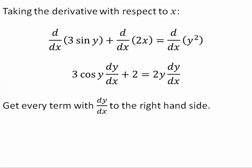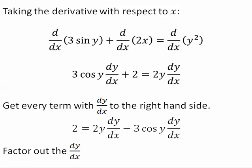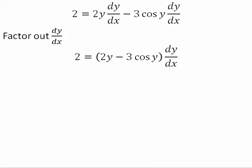Next, we get every term with dy/dx over to the right-hand side. After we do that, we factor out the dy/dx. Factoring out dy/dx, we next divide both sides by 2y minus 3 cosine y.